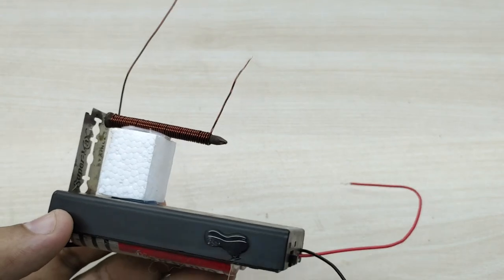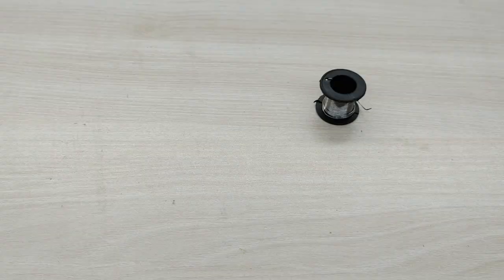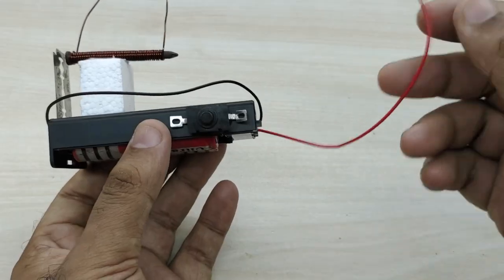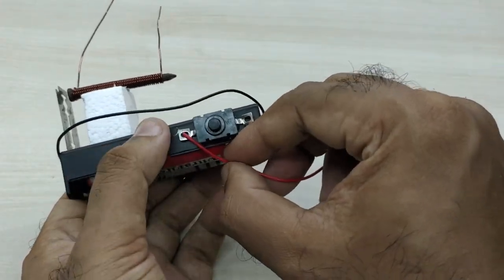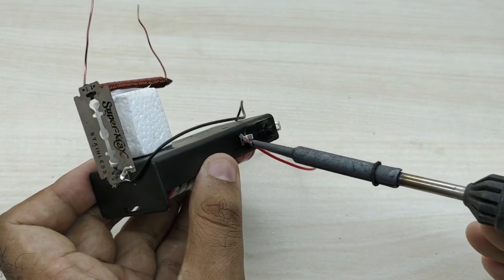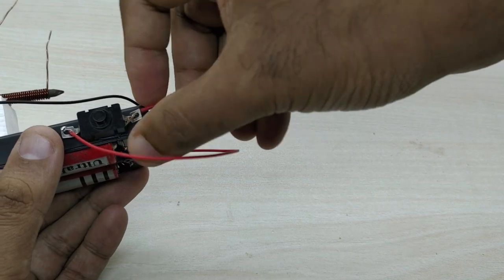Now connect the black wire from the battery pack to the base of the razor blade by soldering. Connect the red wire from the battery pack to one end of the switch.